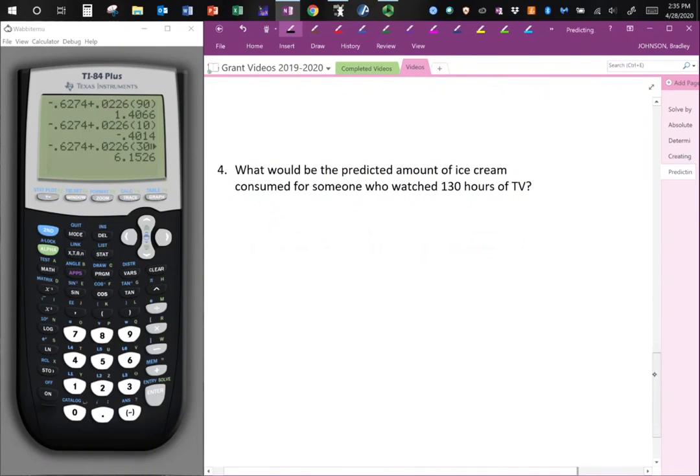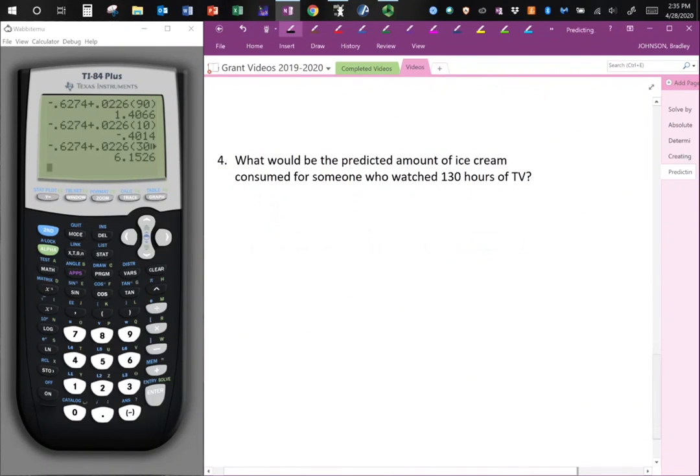Let's do another one. So what would be the predicted amount of ice cream consumed for someone who watched 130 hours of TV? So y hat equals negative 0.6274 plus 0.0226 times 130. So 130 is my x value that I've replaced in my equation.